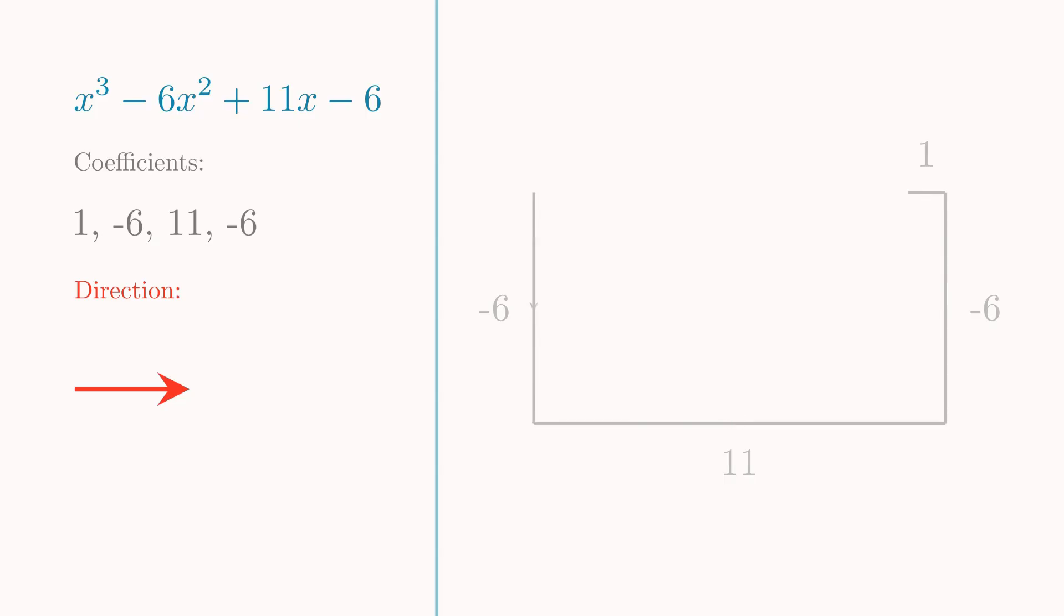Now comes the magic. Imagine shooting a laser from the starting point at some gradient. Now when this laser hits any walls, our lines we drew earlier, it reflects off, but always at 90 degrees, until it has hit the final line.